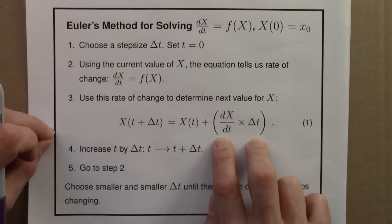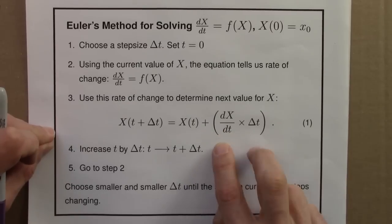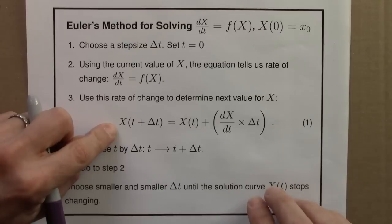This is a little bit of make believe, we're pretending that the rate of change is constant for this time interval delta t, and we can use that to figure out the next value of x.